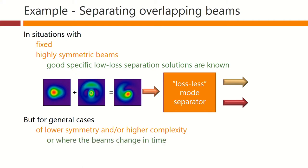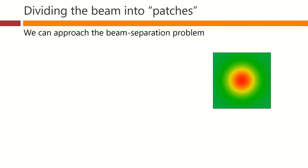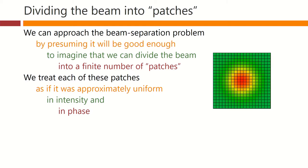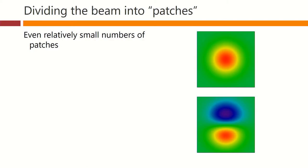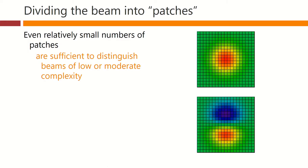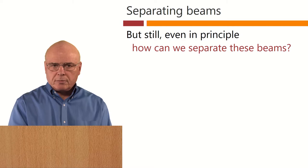And even worse would be if we had beams that changed in time. General solutions to this problem have really not been known. One approach is to divide the beam into patches. We can presume that it will be good enough to imagine that we can divide the beam into a finite number of patches, treating each patch as if it was approximately uniform in intensity and in phase. With a sufficiently large number of patches, this could be a good enough approximation, and the loss associated with this sampling could be made small enough. Even with relatively small numbers of patches, we are able to distinguish beams of low or moderate complexity. But still, even in principle, how can we separate these beams?